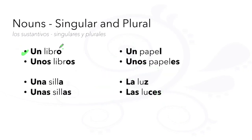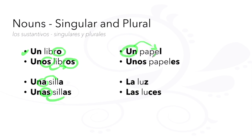Un libro, singular. Unos libros, plural. Una silla, unas sillas. Un papel, unos papeles. La luz, las luces.